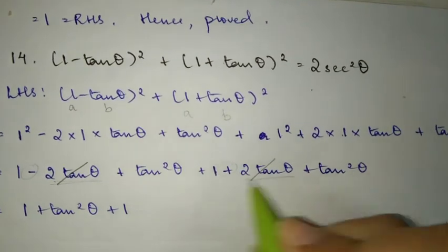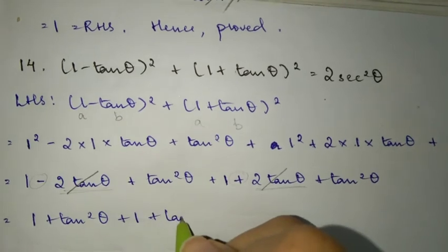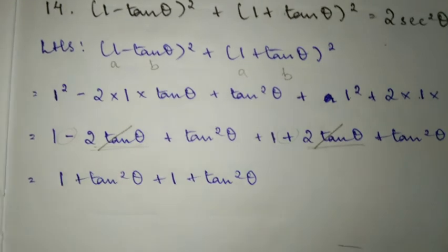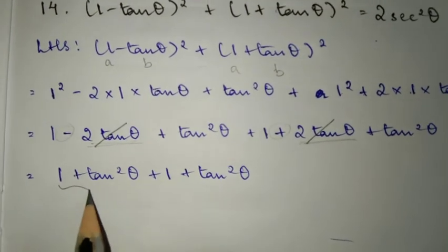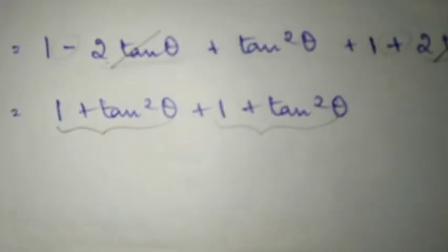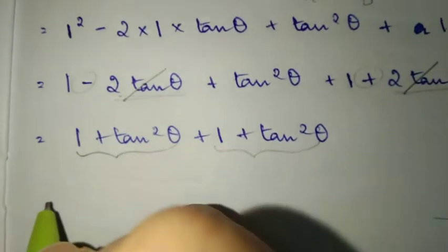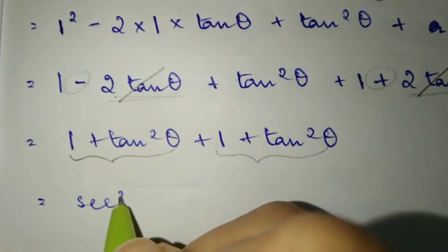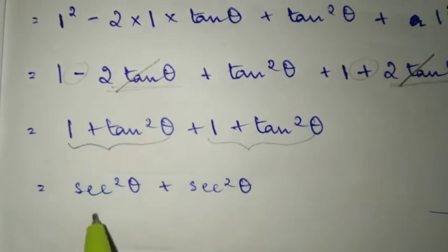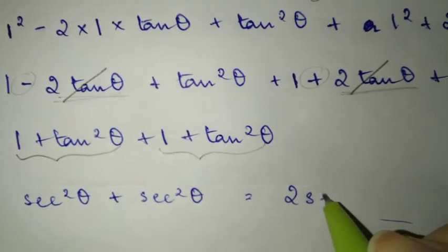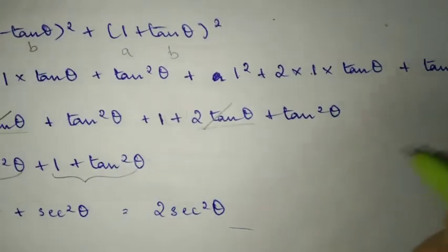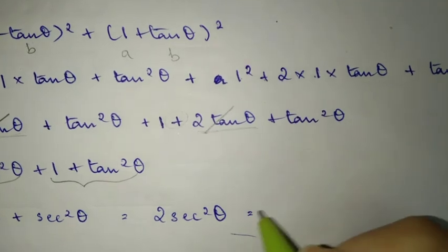We have 2 plus 2 tan square theta, which equals 2(1 plus tan square theta). Using the formula 1 plus tan square theta equals sec square theta, we write this as 2 sec square theta. This equals the RHS — hence proved.